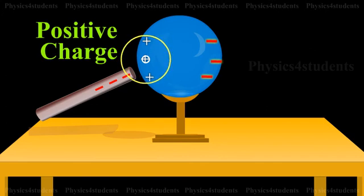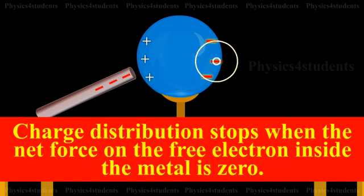This process of charge distribution stops when the net force on the free electron inside the metal is zero. This process happens very fast.